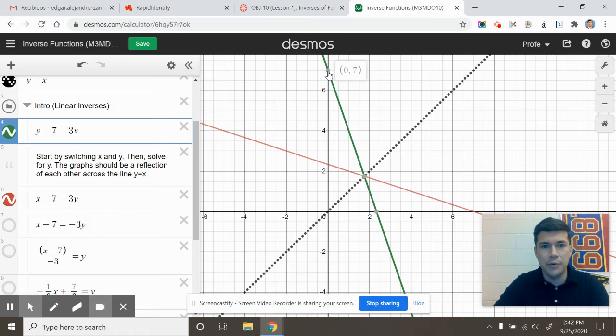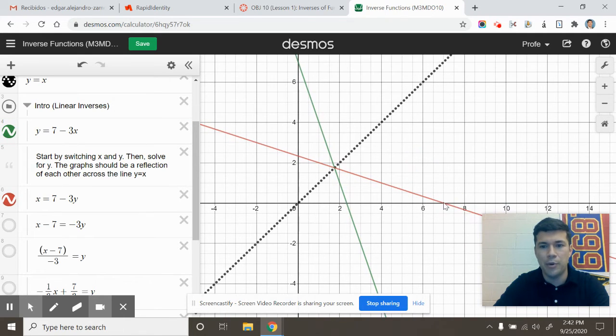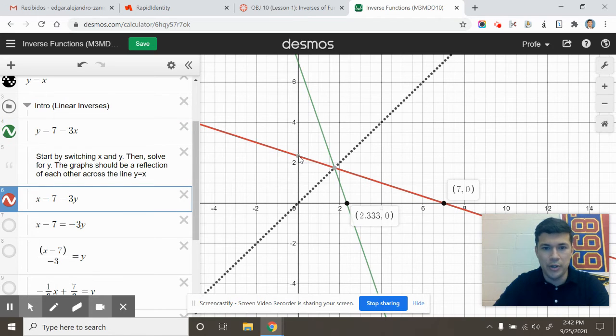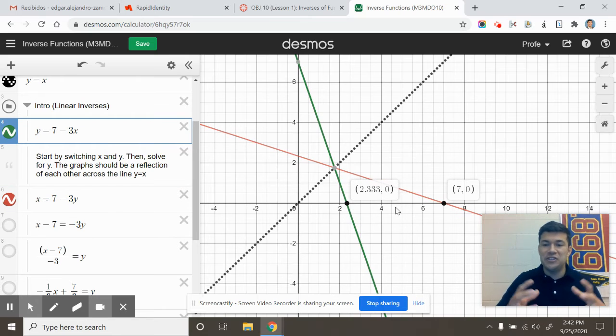You will also notice inverse points. So, for example, where the original function had a point at (0, 7), the inverse function is going to have a point at (7, 0). Where the original function had a point at (2.3, 0), the inverse function will have a point at (0, 2.3). So those are inverted points, and technically every single point has been inverted.